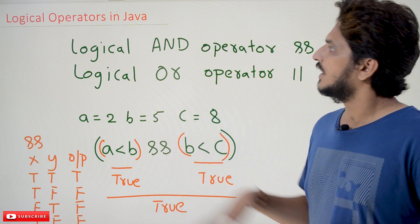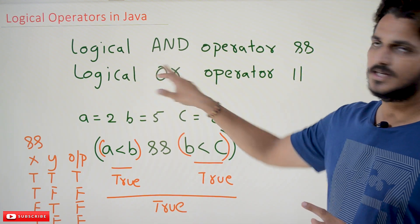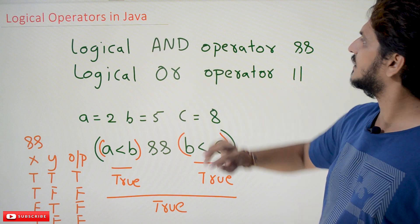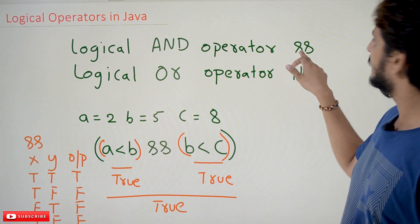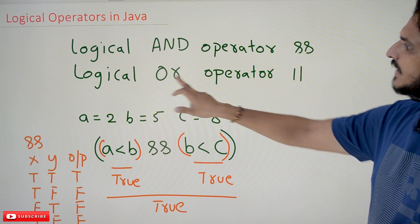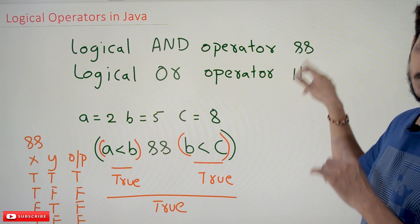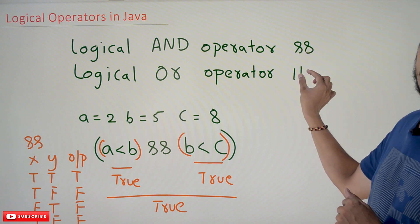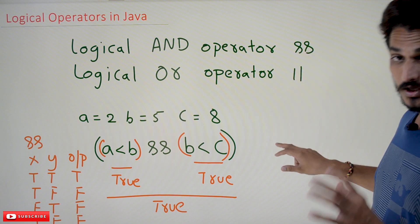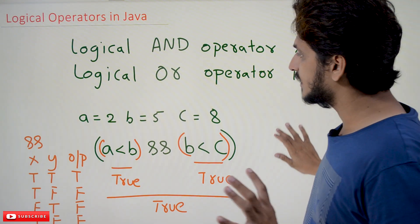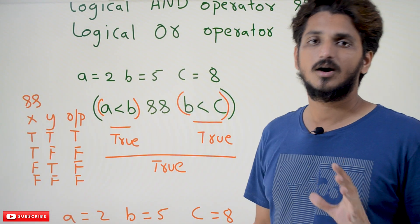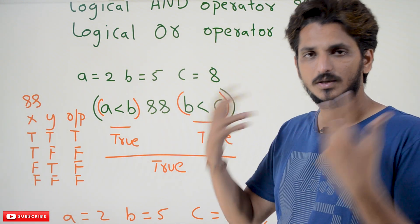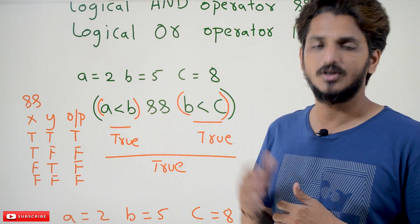Coming to today's class, logical AND and logical OR are the two operators we are going to discuss. The symbol of AND is given as ampersand ampersand (&&), and the symbol of OR is given as pipe symbol pipe symbol (||). Logical operators are very important and we are going to use them multiple times in our conditions in our coding.